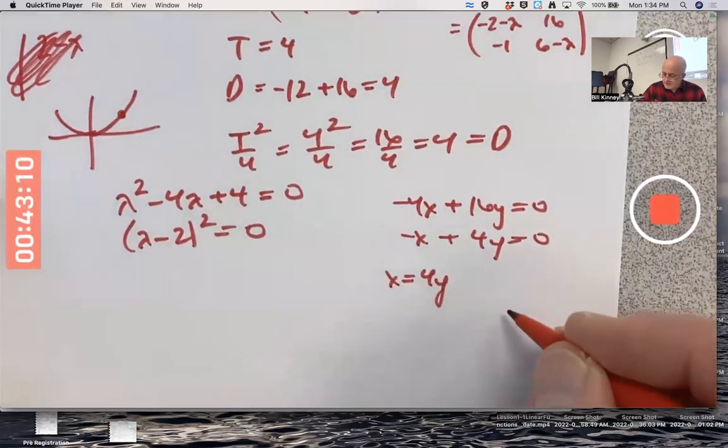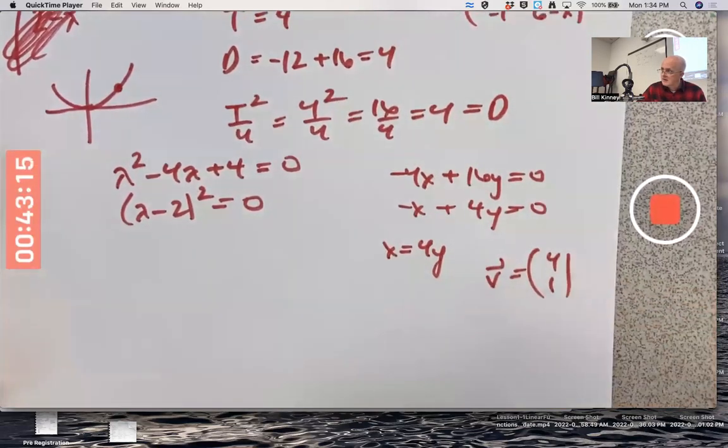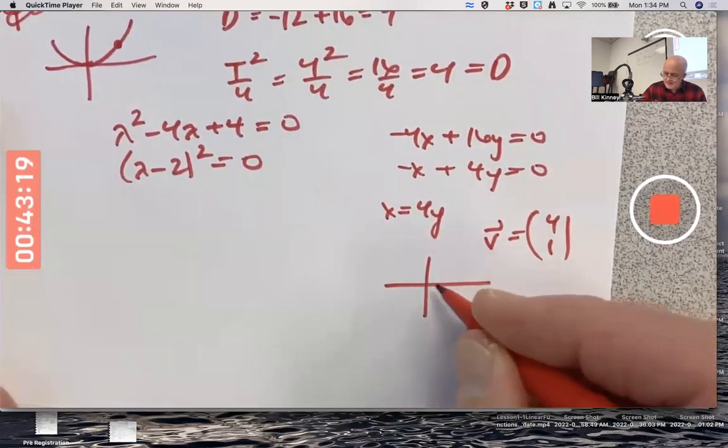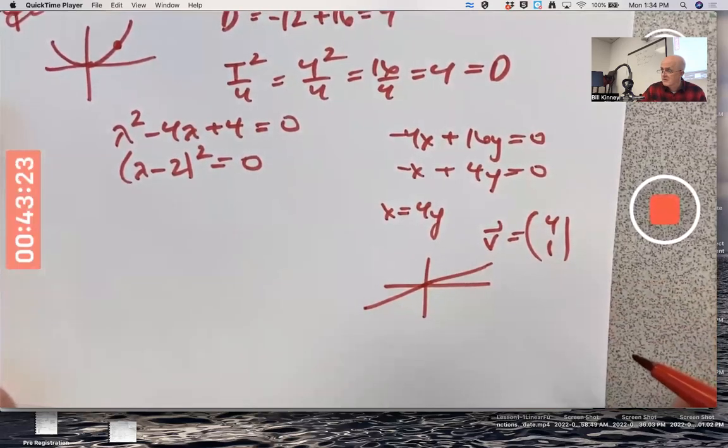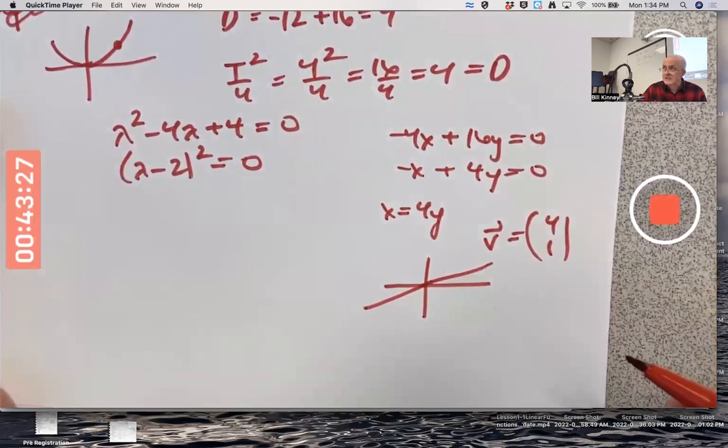It's all vectors that are scalar multiples of four one. All vectors that lie along this line with a slope of one fourth. All non-zero such vectors are eigenvectors and no others.